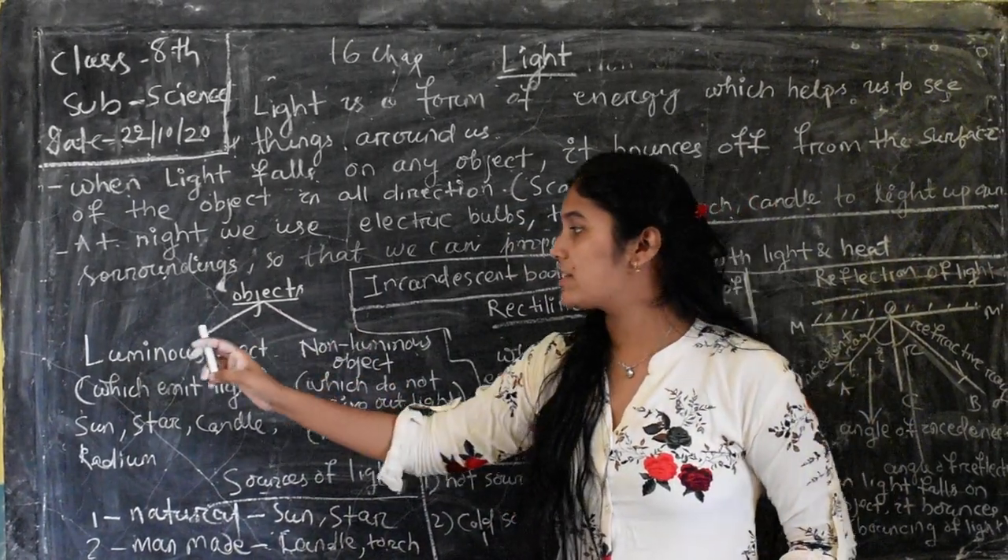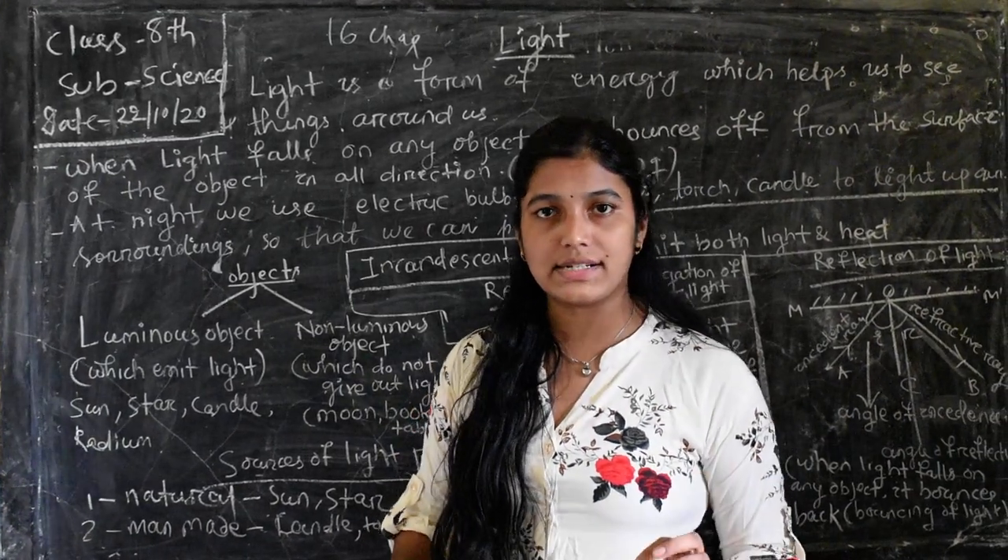Then come to the object. I made a category of objects into two parts: luminous object and non-luminous object. Luminous object means which body emits light of its own is called luminous object, just like sun, star, candle, radium.